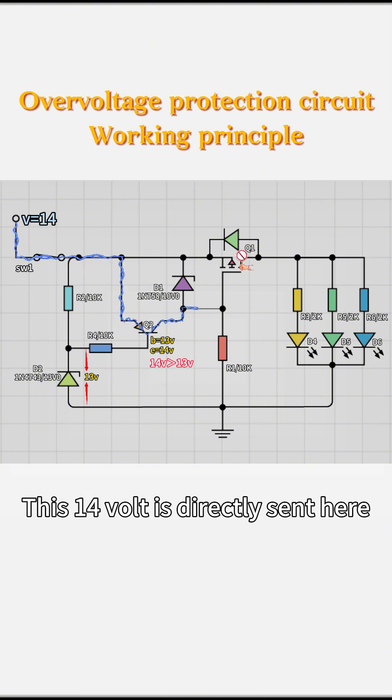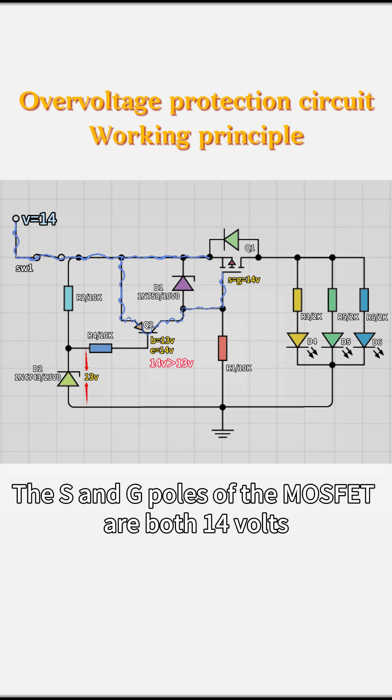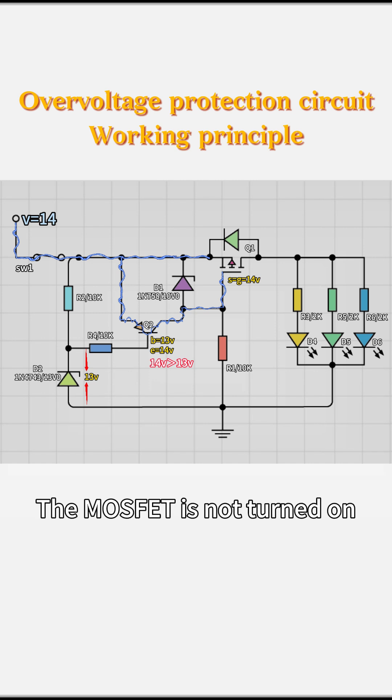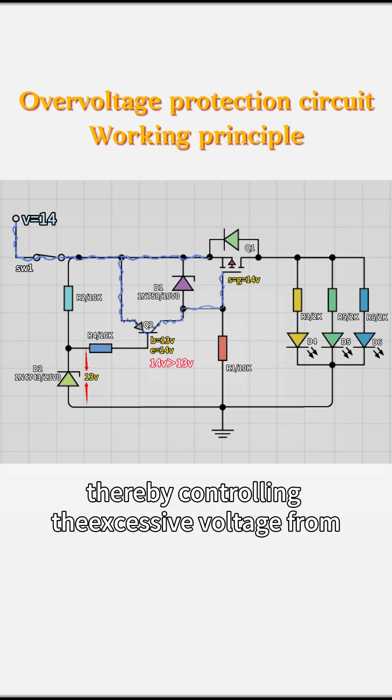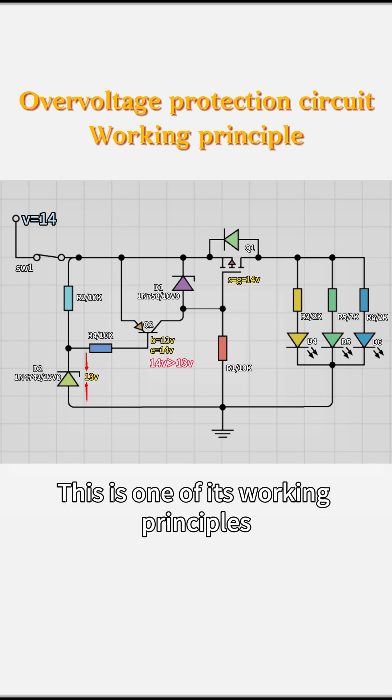This 14V is directly sent here. This side is also 14V. The S and G poles of the MOSFET are both 14V. The MOSFET is not turned on, thereby controlling the excessive voltage from affecting the subsequent load. This is one of its working principles.